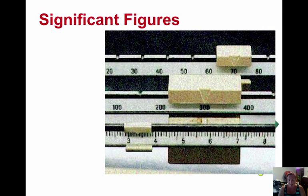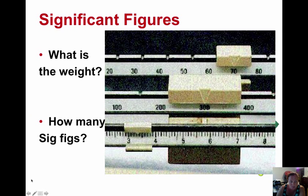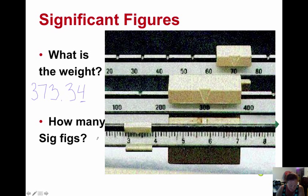So we give the numbers we're confident about and just one number of estimation. If we're using a triple beam balance, let's read off our measurements. So we're in the hundreds — it's 373, and we are able to say it's 373.3, and it's a little bit in between there. We can estimate in between these two lines, so we can estimate one place. We know it's 373.3 and we can give one more digit of estimation — about another 0.4. So 373.34. We are confident about 373.3 and we estimated the 4. So how many significant figures? In this case, we have five: one, two, three, four, five significant figures.